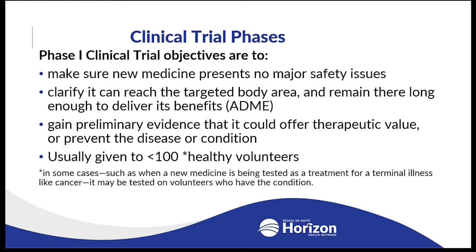In some cases, Phase 1 clinical trials are conducted in a specific disease population, such as cancer, because it would not be ethically appropriate to give healthy volunteers chemotherapeutic agents.